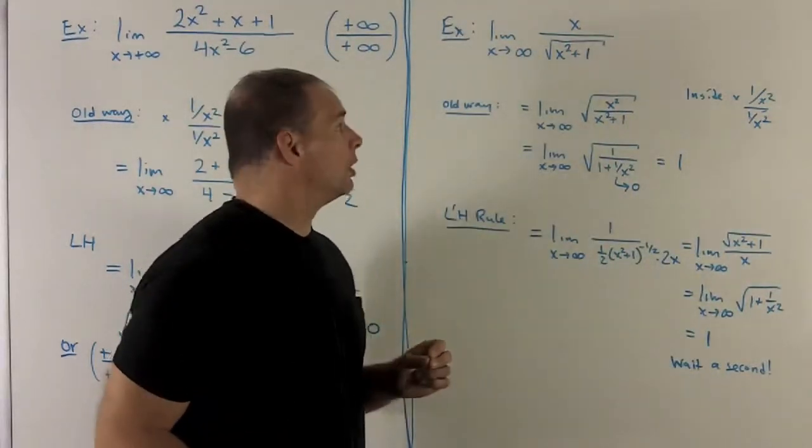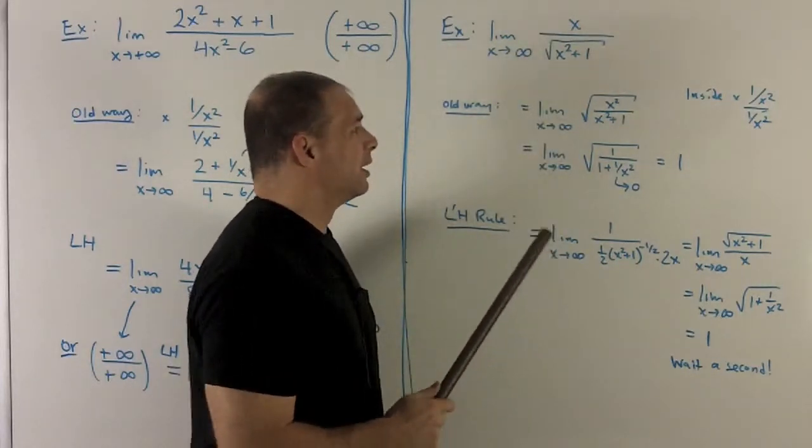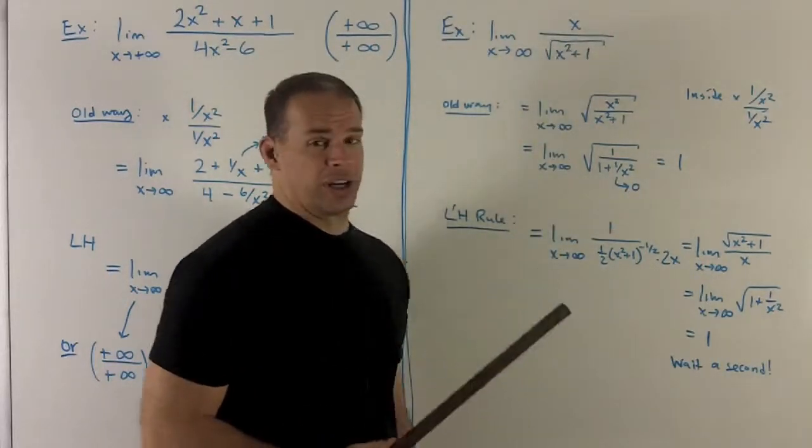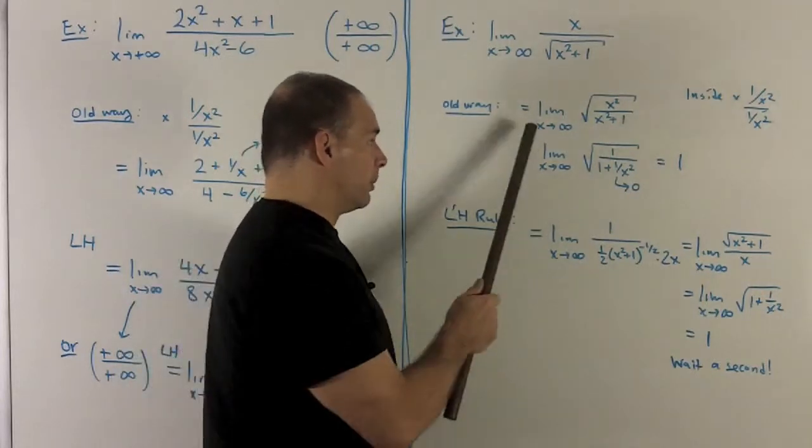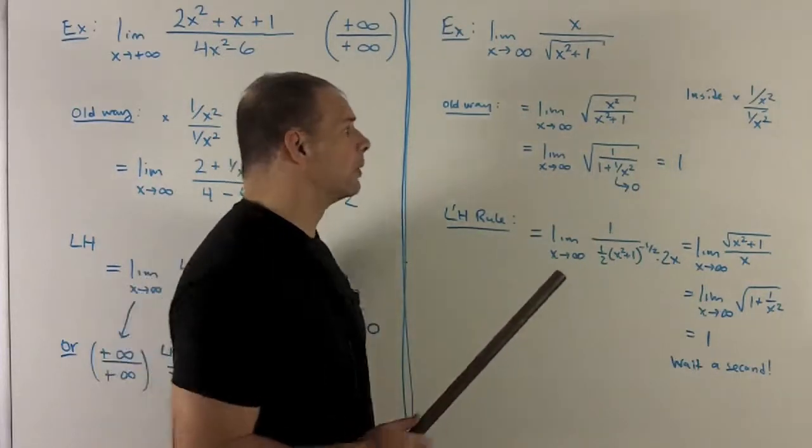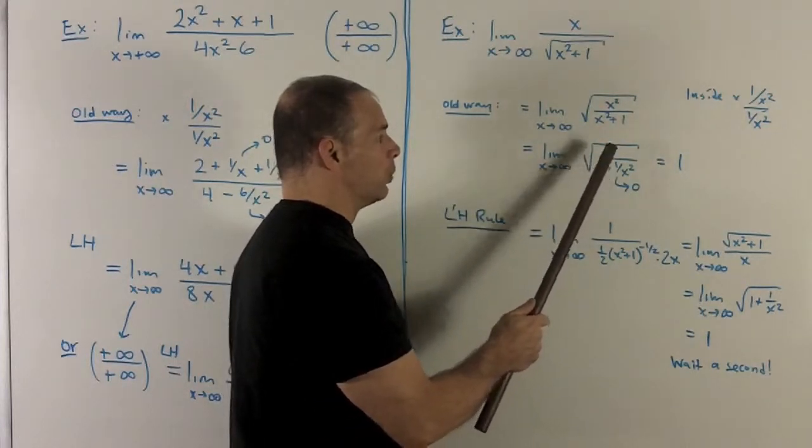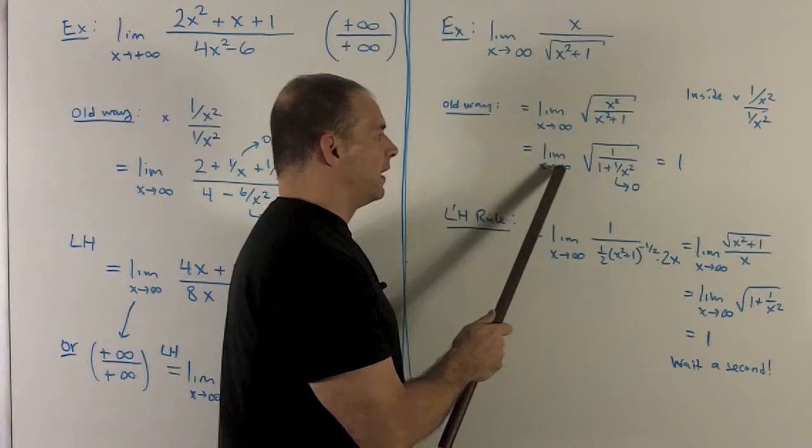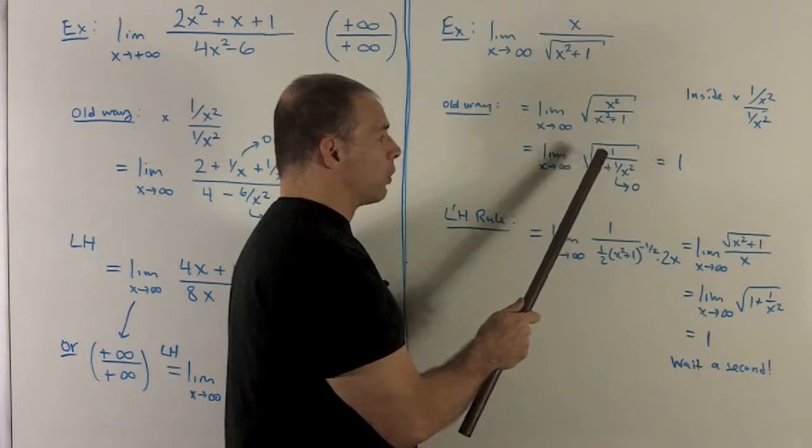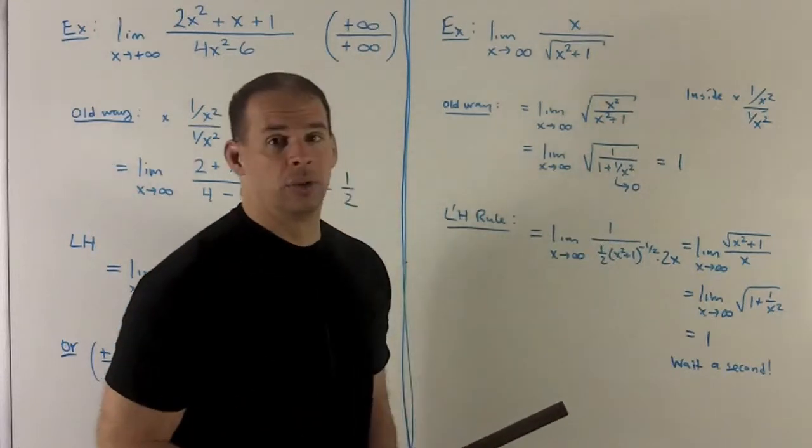Let's look at one last example. Limit as x goes to infinity of x over radical 1 plus x squared. By the old way, what are we going to do? We're just going to absorb the x into the radical by turning it into x squared. Since our limit goes to infinity, we don't have to worry about minus signs, since we'll be far out on the positive numbers. I can divide the top and bottom on the inside by x squared, and that'll leave me with a 1 over 1 plus 1 over x squared. Limit's going to infinity. This is continuous, so I can push the limit to the inside. Then that's going to give me 1 over 1 plus, and then 1 over x squared goes to 0. So I'm going to have just 1 over 1 radical, which is 1.